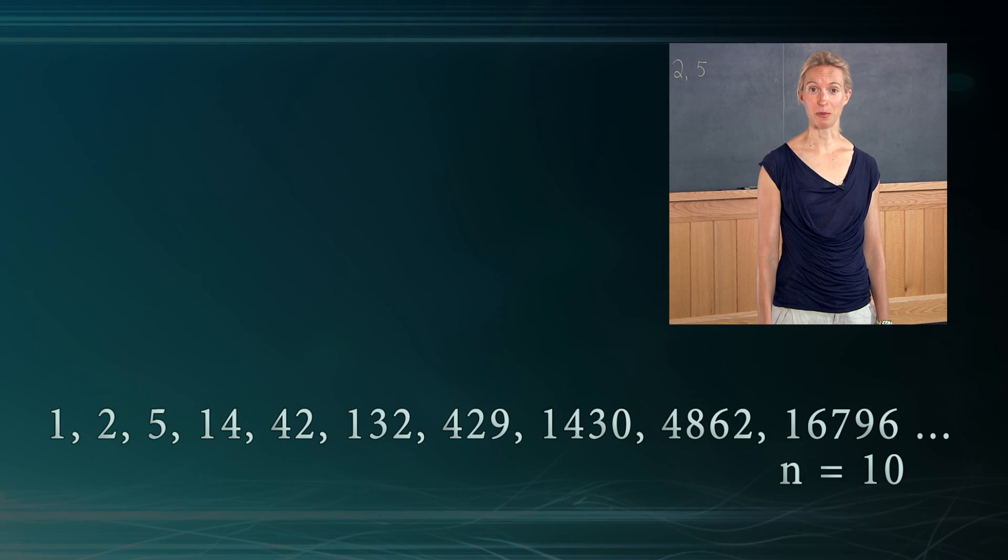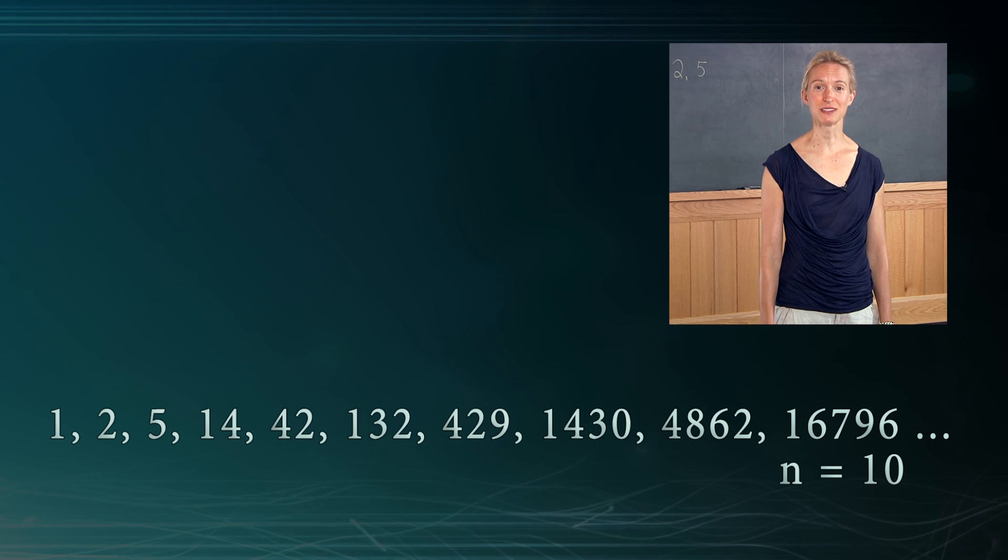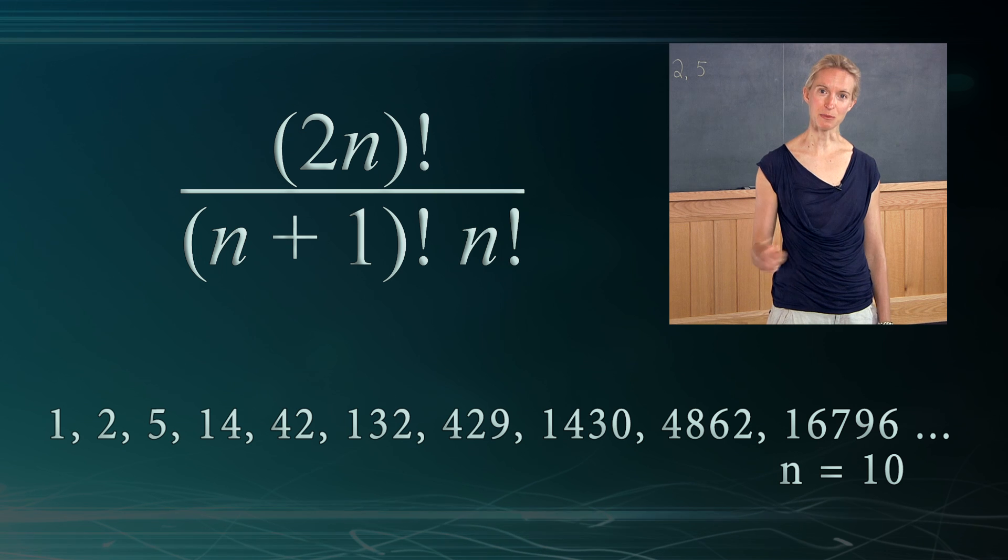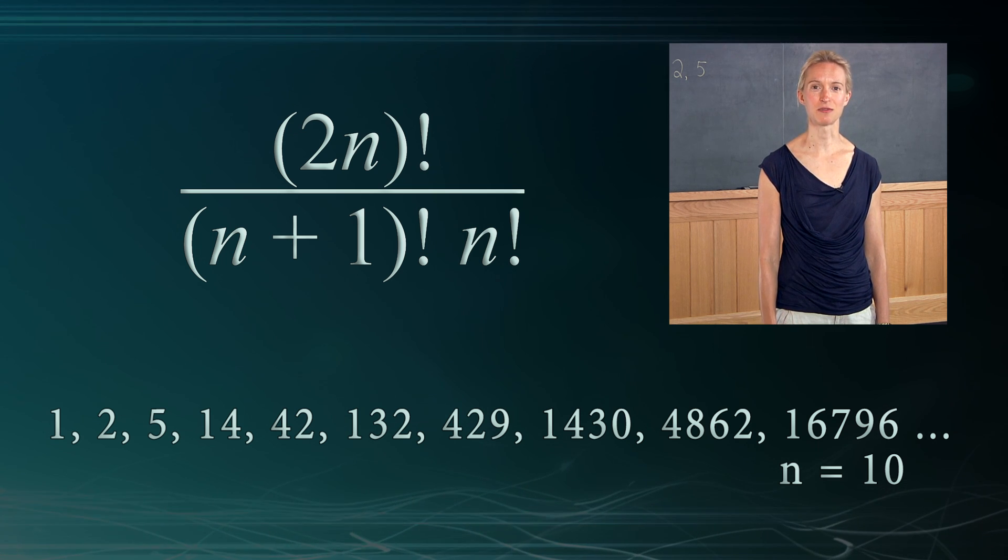So the tenth Catalan number would be 16,796. We get that by taking the number 10 and substituting it in for n in this formula.